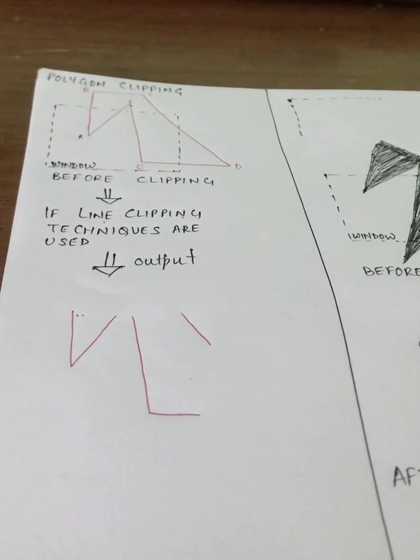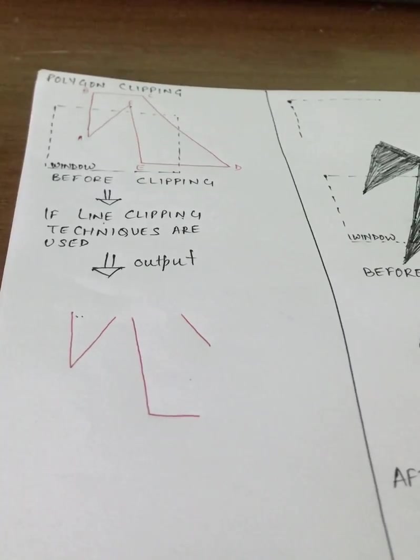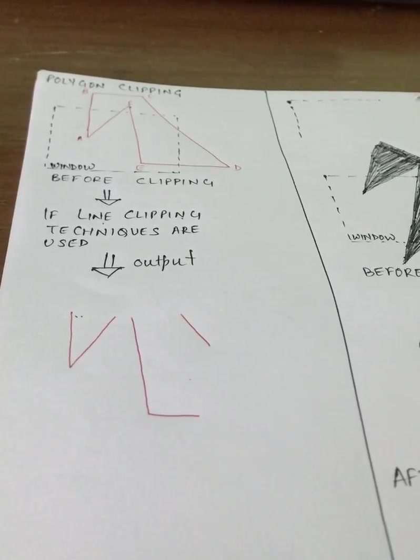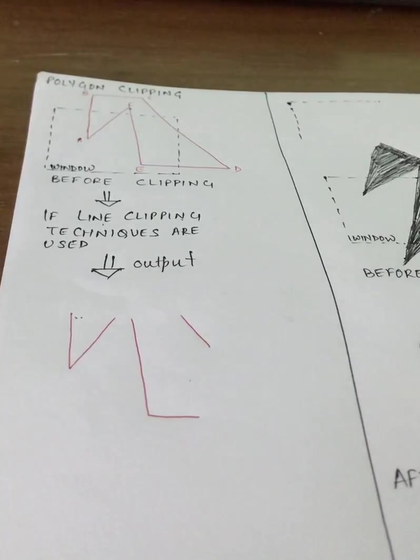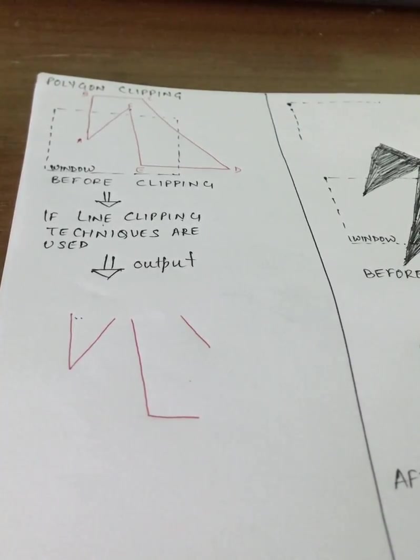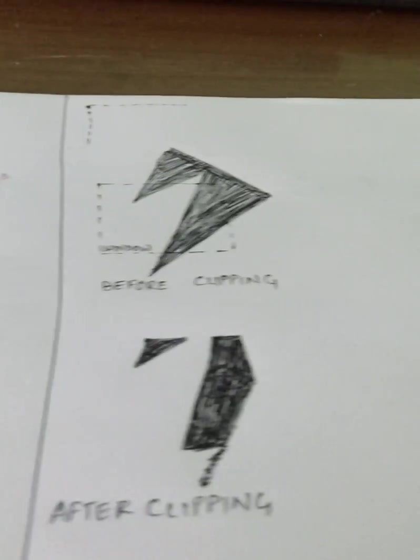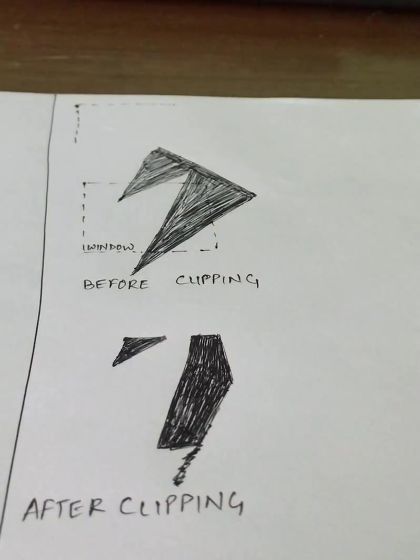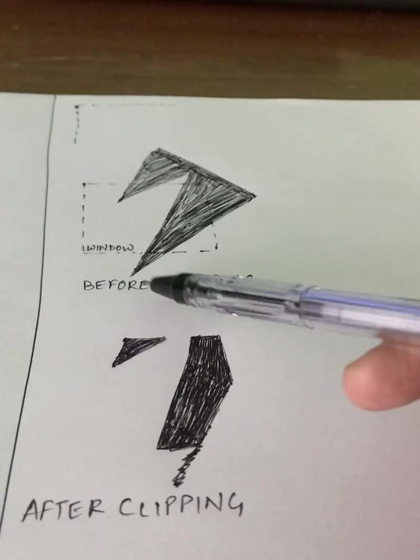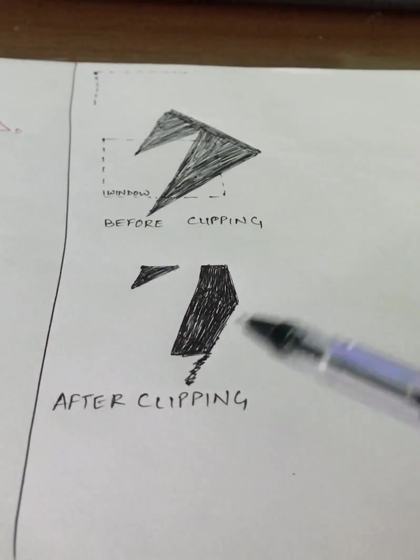For polygon clipping, we require an algorithm that will generate one or more closed areas that are scan converted later for the appropriate area fill. If I have another polygon right here, this is my window. This is before clipping, after clipping, this is the desired output that I should get in terms of polygons.